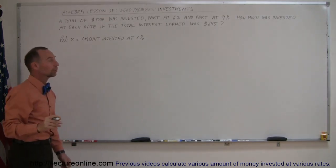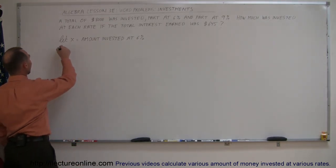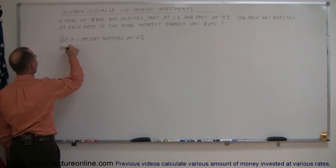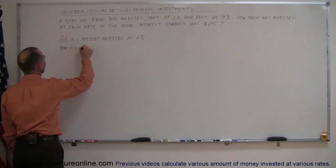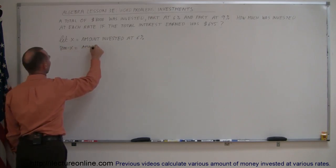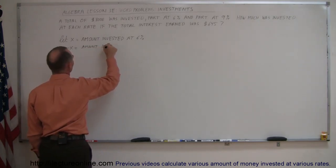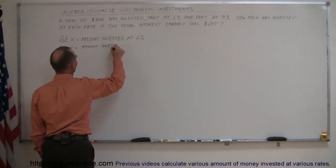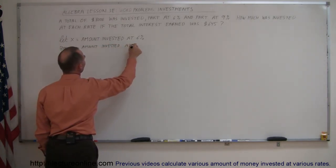That means the remainder, the leftover of the 8,000, so 8,000 minus X is the amount invested at 9%.